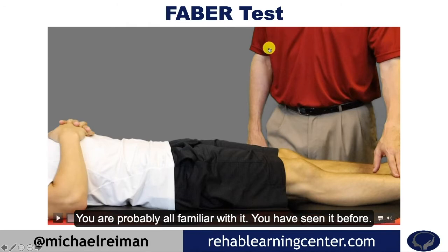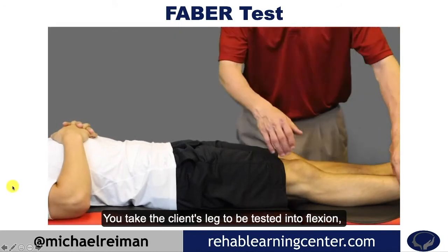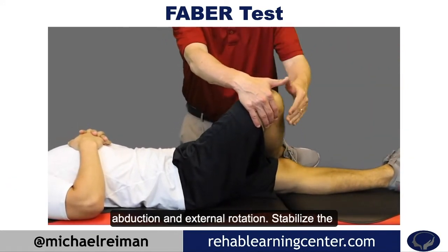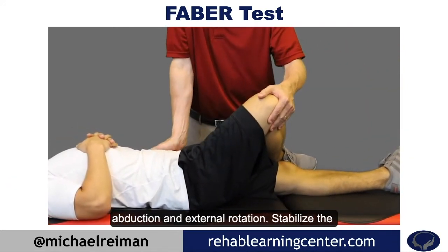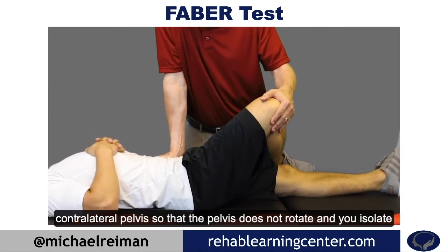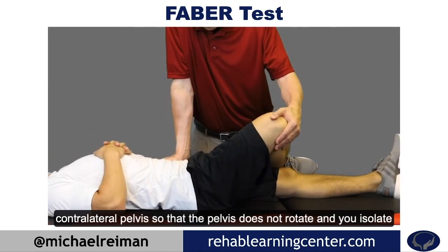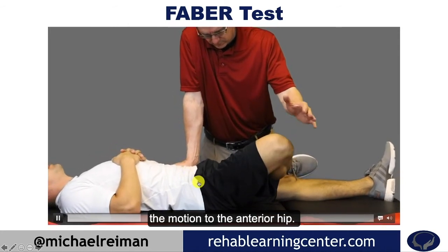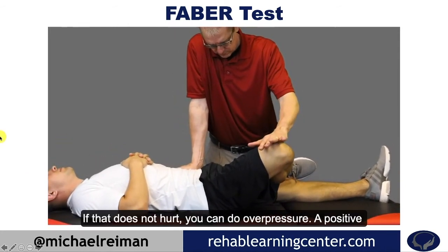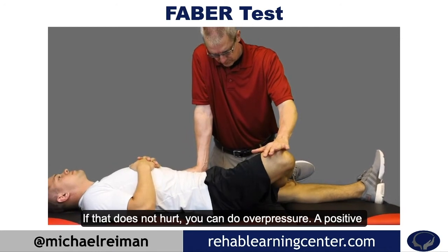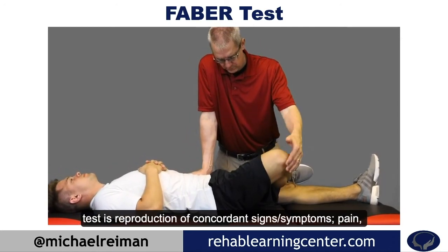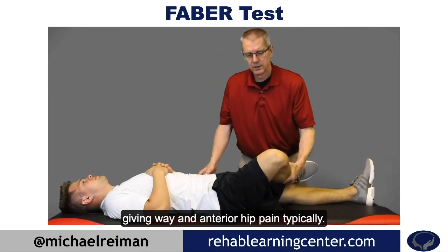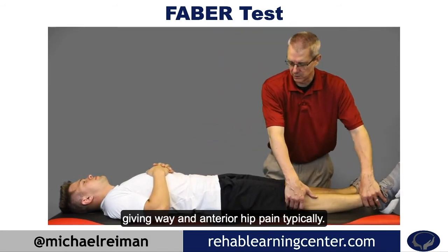You're probably all familiar with it. You take the client's leg to be tested up into flexion, abduction, and external rotation. Stabilize the contralateral pelvis so it doesn't rotate and you isolate the motion to the anterior hip. If that doesn't hurt, you can do overpressure. A positive test is reproduction of concordant signs and/or symptoms — pain, giving way, and anterior hip pain typically.